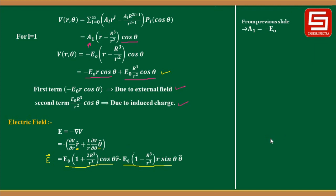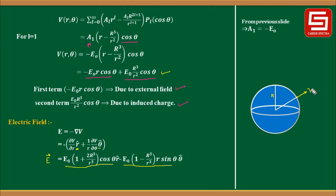Note that for a conducting sphere, only the radial component of electric field exists at the surface; the tangential component at the surface is always zero. Substituting r = R into the expression confirms this: the tangential component becomes zero, and at the surface you get only the radial component, directed perpendicularly outward.